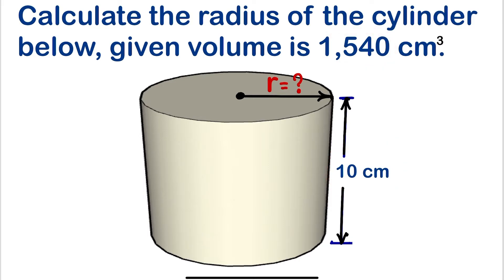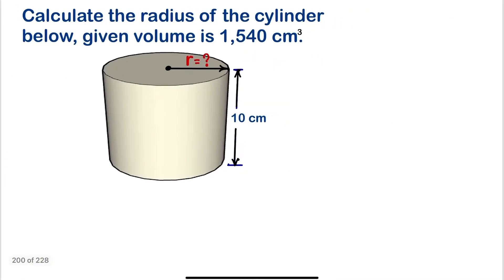In doing that, we need to write the formula of volume so we'll be able to substitute all the values so that we can calculate the unknown, which is the radius. So let's get started.